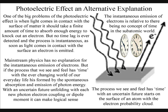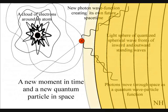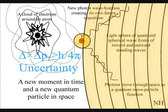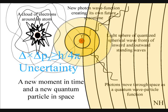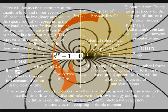Mainstream physics has no explanation for the instantaneous emission of electrons. But if the process that we see and feel has time with the ever changing world of our everyday life is formed by the spontaneous absorption and emission of photon energy, with an uncertain future unfolding with each new photon electron coupling or dipole moment, it can make logical sense.